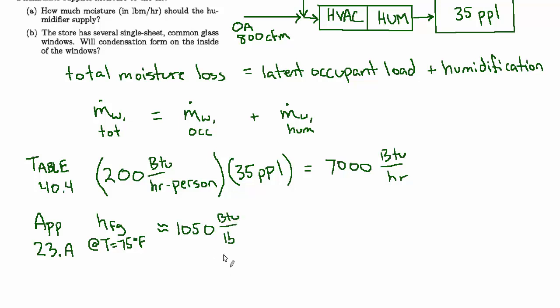So let's just say this is approximately 1050 BTU per pound, and that's BTU per pound of water, of course, because we're talking about water vapor. And now we can use the fact that the latent heat, which has energy units—that's the 7,000 BTU per hour—is equal to the mass flow rate of water times the latent heat of vaporization. So now we know this and we know this, we can solve for ṁ.